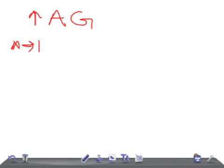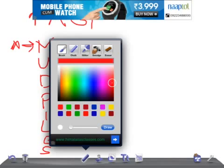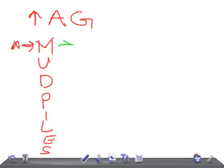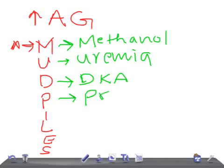There's a beautiful pneumonic for increased anion gap conditions — that's MUDPILES. Let's go through it. This is very important for Step 1. M is for methanol. U is for uremia. D is for diabetic ketoacidosis (DKA). P is for propylene glycol.